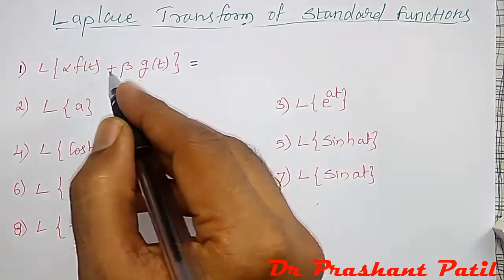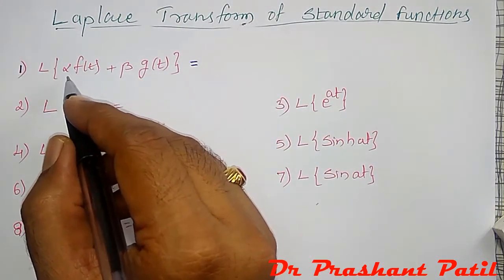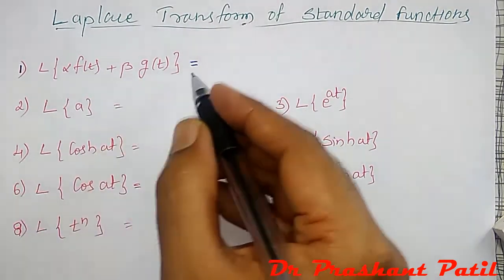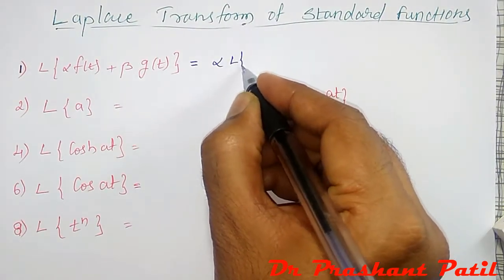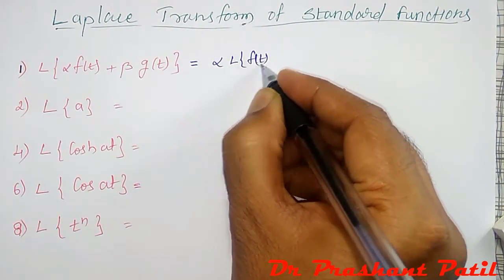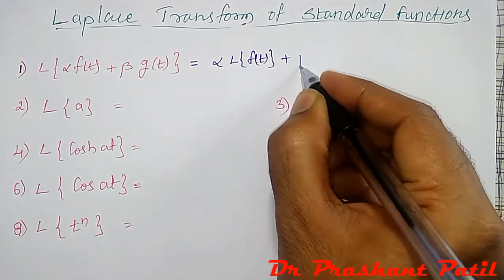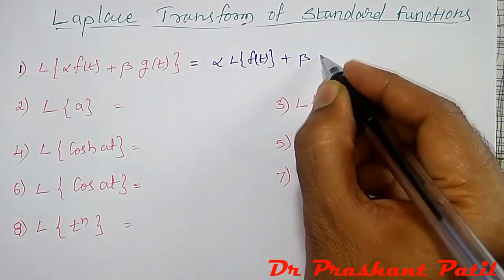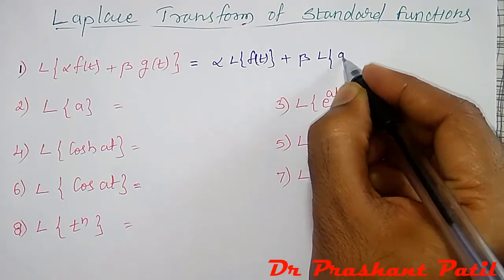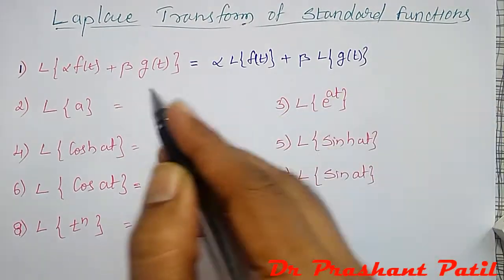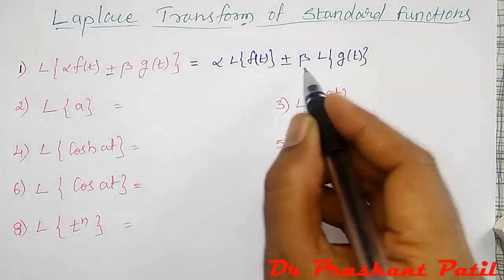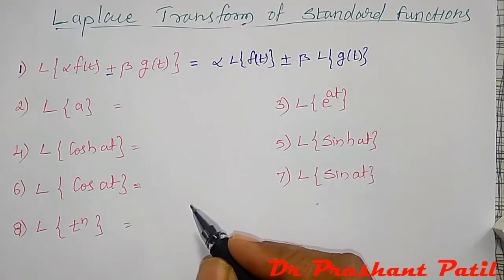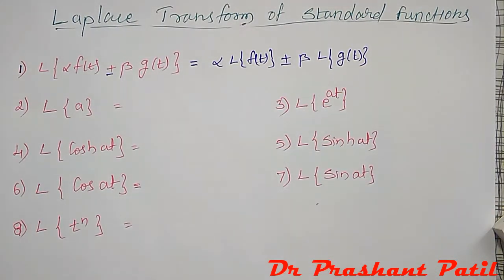If there is addition of two functions with scalar multiplication, I can write them separately as alpha times the Laplace transform of f(t) plus beta times the Laplace transform of g(t). This means if addition or subtraction of any two terms is there, separate Laplace transforms can be calculated, but if a product is there, I cannot apply this property directly.